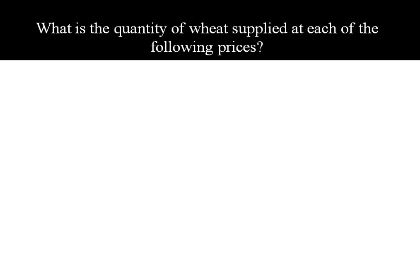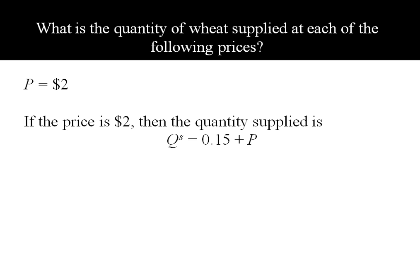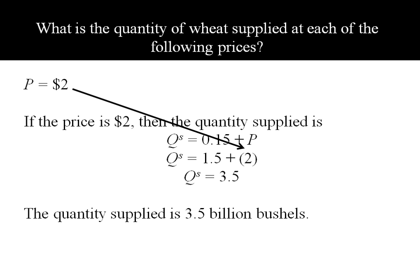Let's find the quantity of wheat supplied at each of the following prices. Suppose the price of a bushel is $2. To find the quantity supplied, we'll use our original equation and plug in 2 for price. This one's quite simple to solve. We've got quantity supplied is 3.5. Now remember that's 3.5 billion bushels.